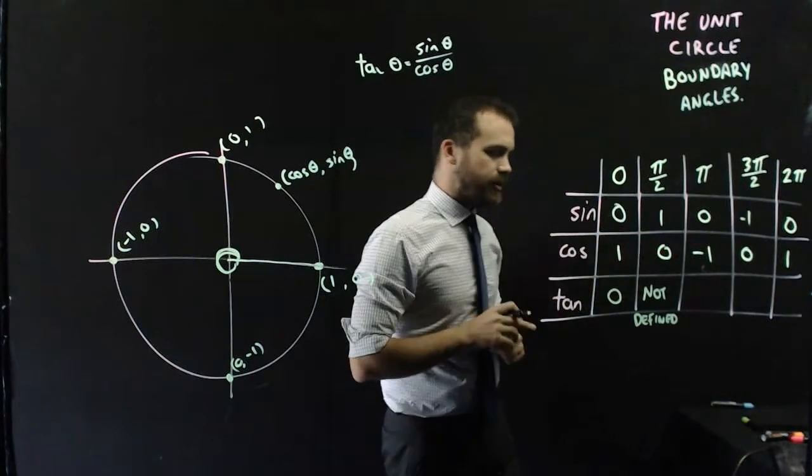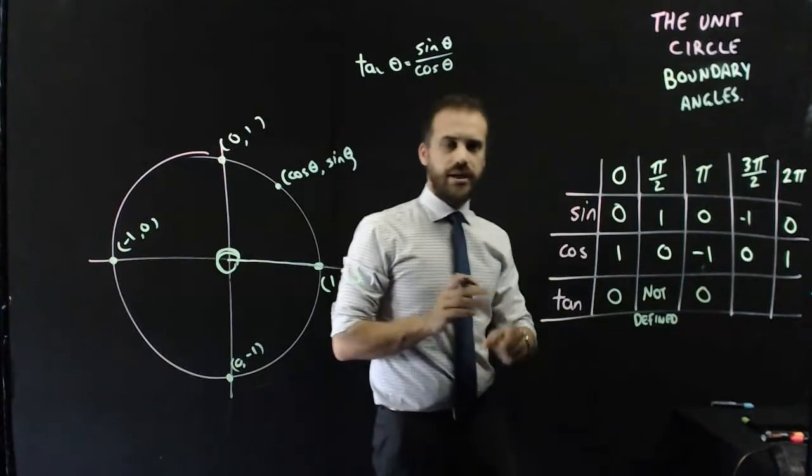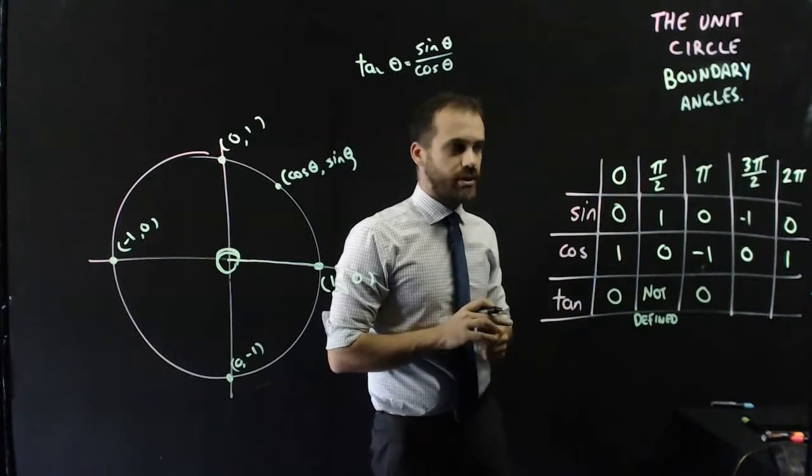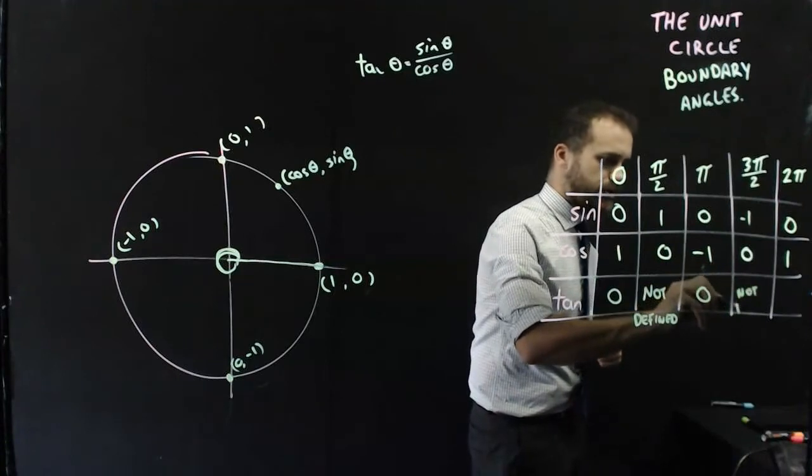Alright, 0 divided by negative 1, 0 divided by anything is 0. Negative 1 divided by 0, you can't divide by 0, so that's not defined.